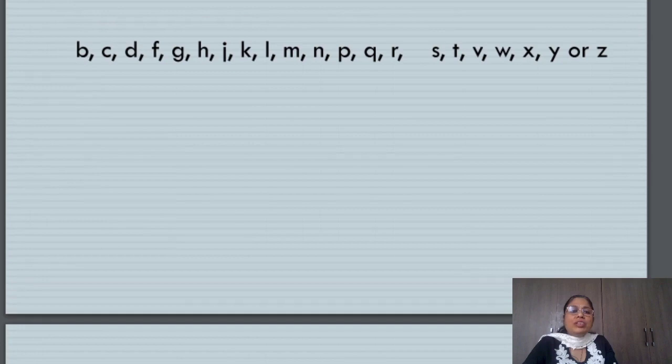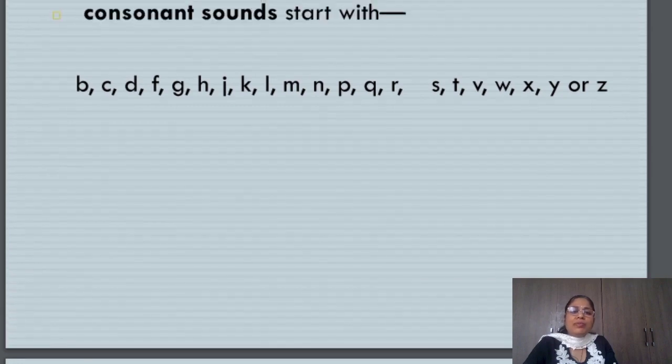These are the consonants of English language. All the alphabets, 26 alphabets, are divided into two. But the vowels in English language are only five: A, E, I, O, U. And the consonants are the other 21 alphabets.